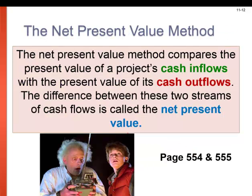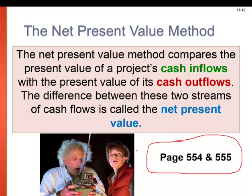The net present value method compares the present value of a project's cash inflows with the present value of its cash outflows. The difference between these two streams of cash flows is called the net present value. We're going to do some calculations that will require the tables in your book — refer to pages 554 and 555 in your textbook as we go forward.